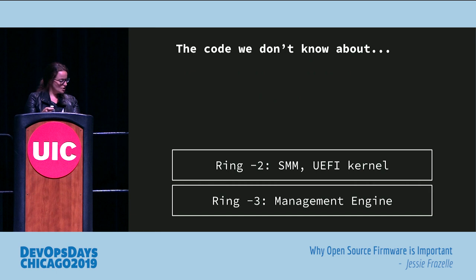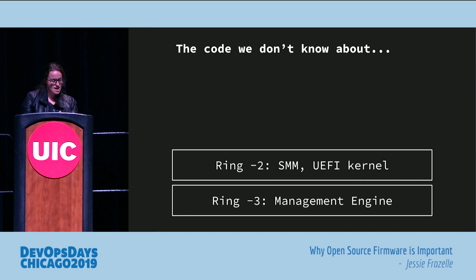The code that we don't know about — because you can use open source software for all the others — is system management mode, the UEFI kernel, and the management engine. That's pretty scary: our most privileged software is in the layers that we don't know about.